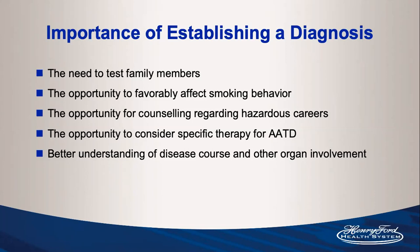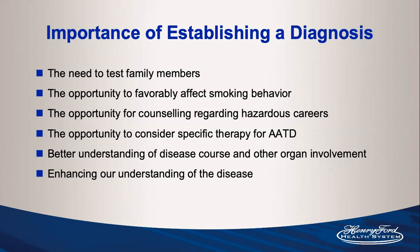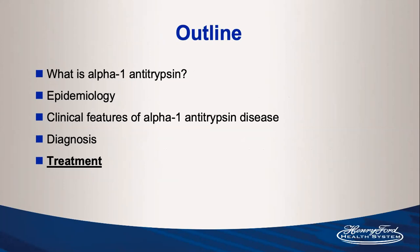Diagnosis also provides a better understanding of disease course — alpha-1 patients often progress faster than typical COPD — and prompts monitoring for other organ involvement like liver disease that might be overlooked. More widespread testing would enhance our understanding of the disease and improve the limited, often retrospective, small-numbers data that currently surrounds alpha-1 antitrypsin treatments.